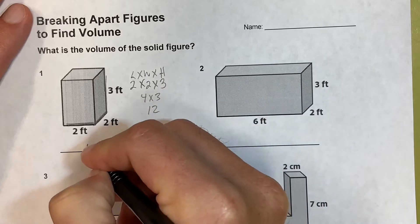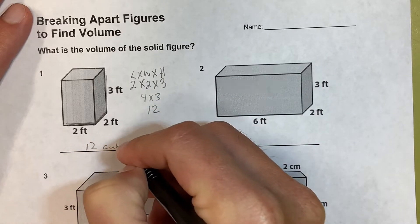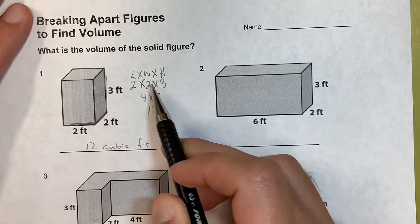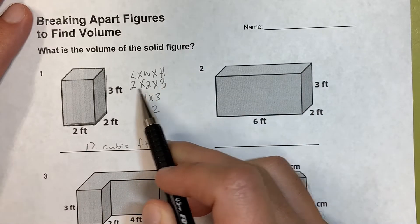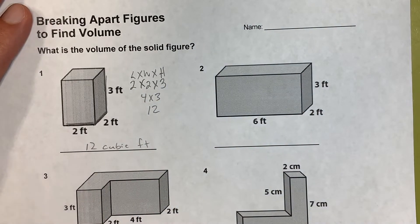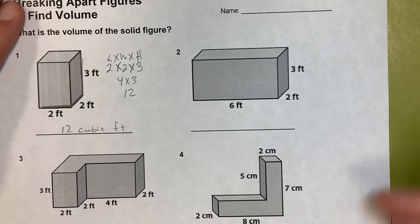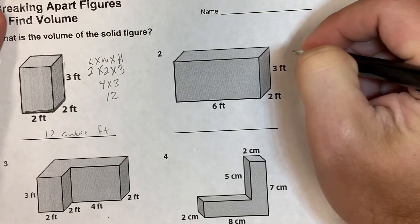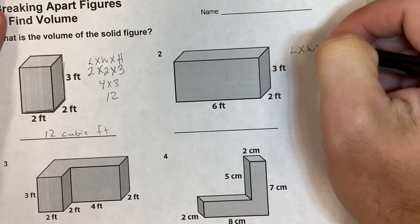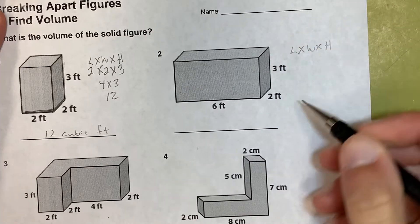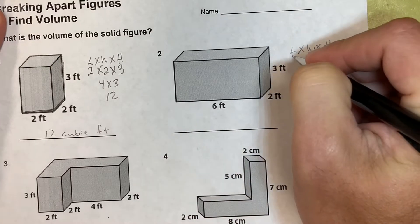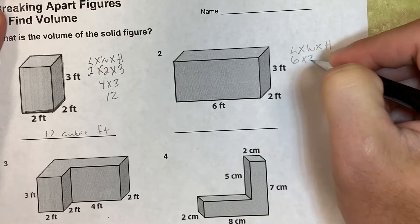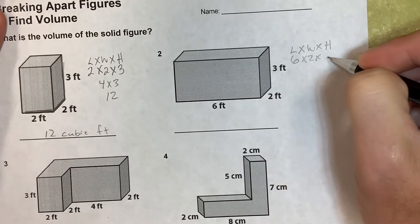So the first answer is twelve cubic feet. If you did it the other way, three times two is six, and six times two is still twelve. It doesn't matter, thanks to the commutative property. So: length times width times height — length across the front is six, width is two, and height is three. Six times two is twelve, twelve times three is thirty-six.